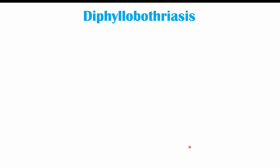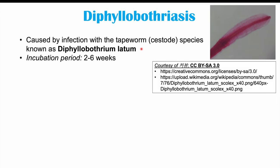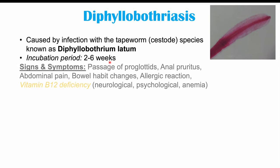Diphyllobothriasis is a condition caused by infection with a tapeworm, or cestode, known as Diphyllobothrium latum — the fish tapeworm. When a person eats the juvenile stage of this tapeworm in an uncooked or undercooked fish product, it takes two to six weeks before that juvenile form develops into the adult tapeworm, and before we start to see signs and symptoms.